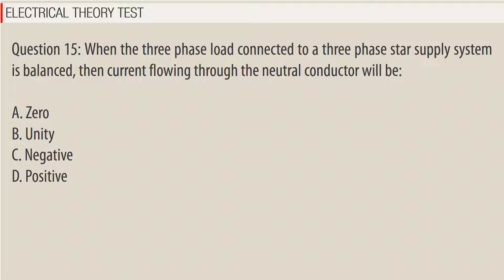Question 15: When the three-phase load connected to a three-phase star supply system is balanced, the current flowing through the neutral conductor will be — A. Zero, B. Unity, C. Negative, D. Positive. Answer: A.